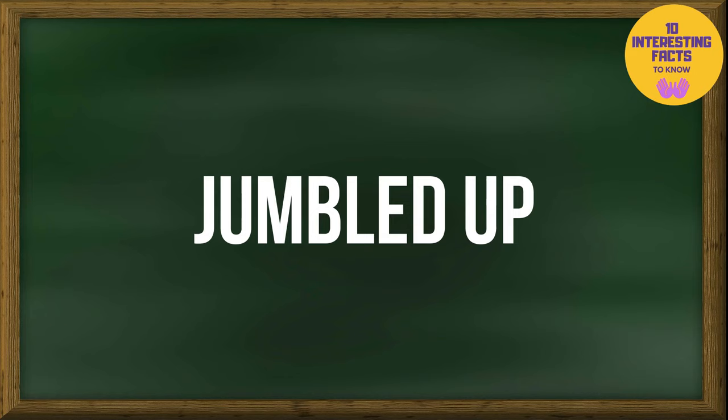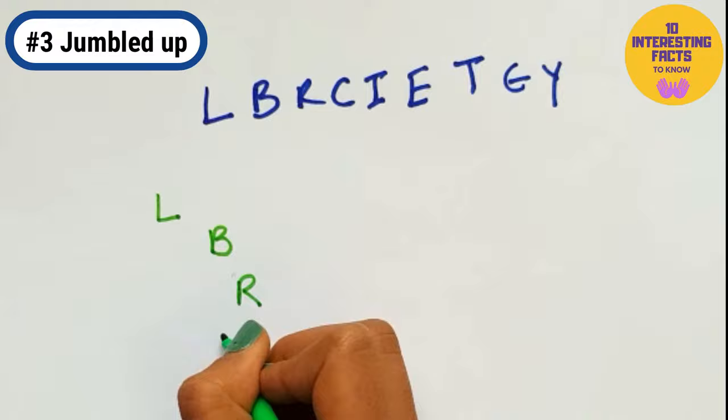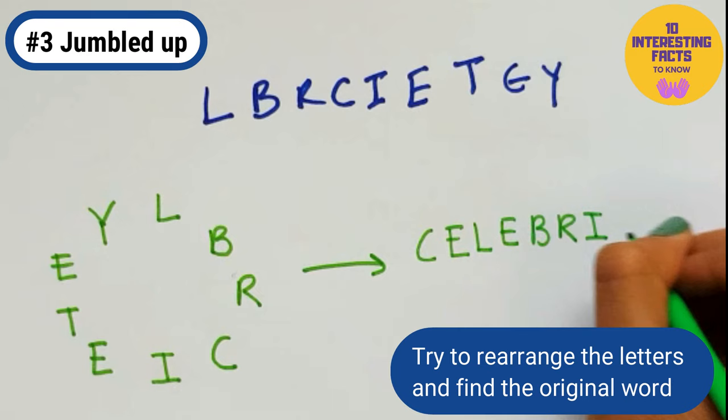Jumbled up. Player 1 thinks of a word and jumbles up the letters. Player 2 has to find the original word. Arranging the jumbled up letters in a circle is a good technique to find the word. Make it more interesting by keeping a time limit. Solve it! The word here is celebrity.